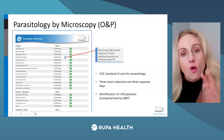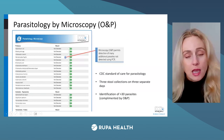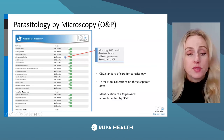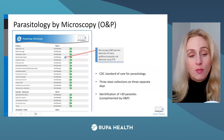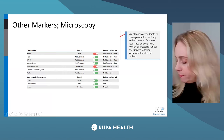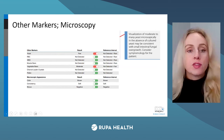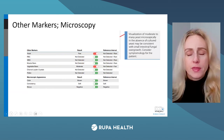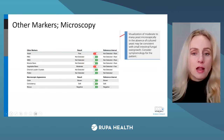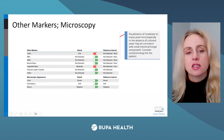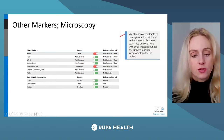GI 360 also includes parasitology for over 30 parasites via Ova and Parasite parasitology — an expert parasitologist looking at a three-day sample under the microscope, which is still the standard of care. GI 360 includes both PCR and O&P parasitology for parasites. Additionally, looking under the microscope, we look for other markers: red blood cells, white blood cells, and digestive markers — muscle fibers, vegetable fibers, Charcot-Leyden crystals, pollen. The macroscopic appearance — color, consistency, mucus — is all included as well.